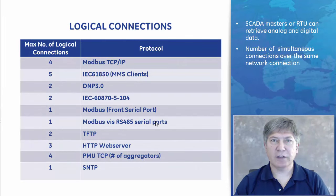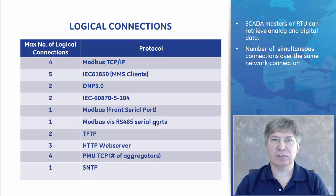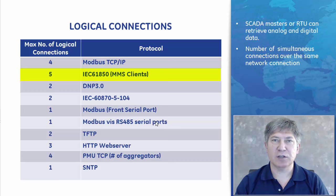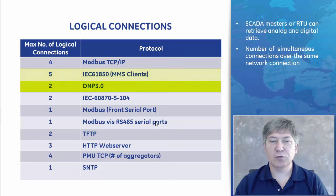In utility and industrial applications, multiple SCADA masters and RTUs constantly retrieve pertinent information in the form of analog and digital data. This table acts as a guide showing the number of logical connections per protocol. For Modbus TCP/IP, we have a maximum of four logical connections. IEC 61850 has a maximum of five connections. DNP3 has two, and so on, all the way down to SNTP.